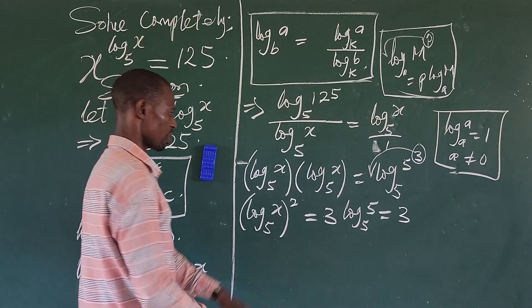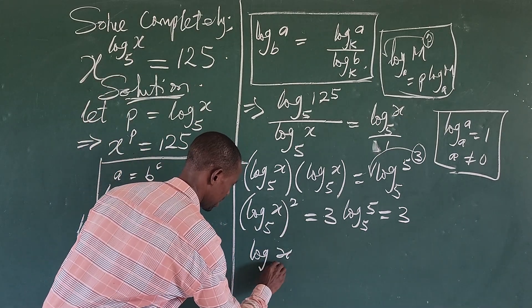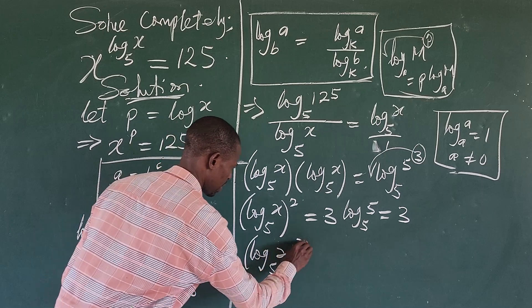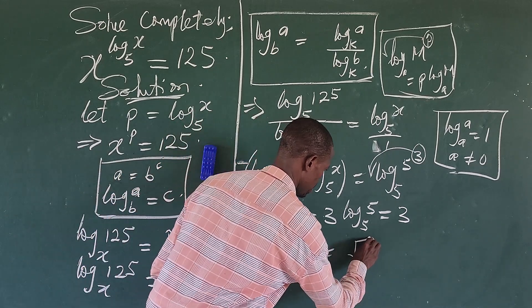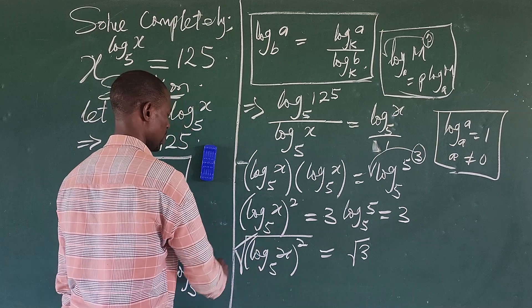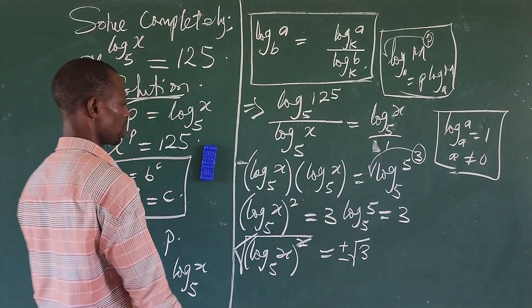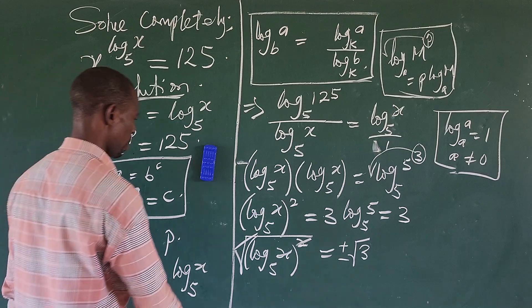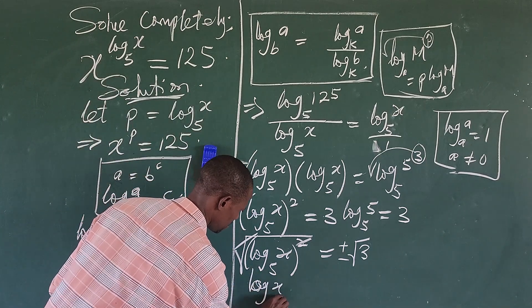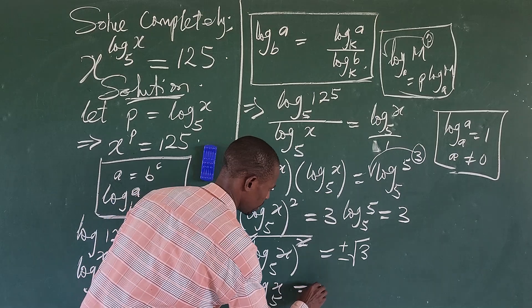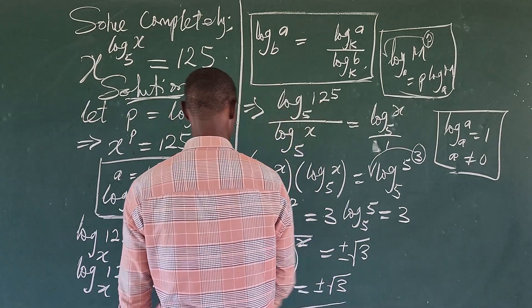We can now take the square root of both sides. Taking the square root of (log_x 5)^2 equals the square root of 3, and introducing plus or minus, we get log_x 5 equals plus or minus the square root of 3.